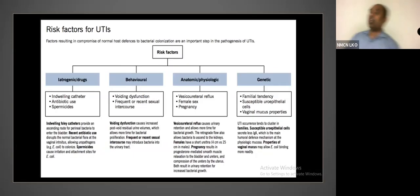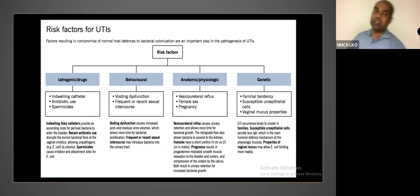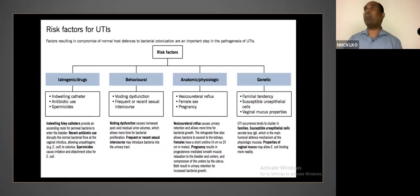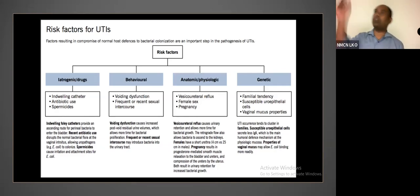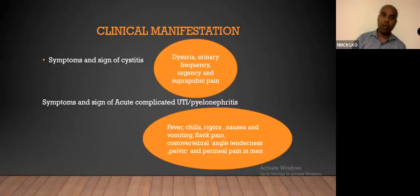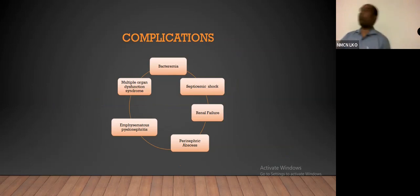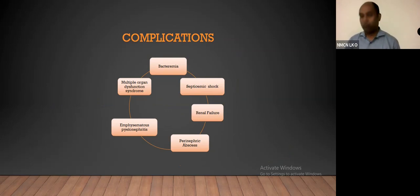The risk factors you should look for include indwelling catheters, prior antibiotic usage — which determines what type of treatment you will plan — and behavioral factors such as infrequent voiding or frequent recent intercourse that can lead to recurrent infections. Physiological changes like pregnancy, genetic susceptibilities, and anatomical changes like stones or strictures are also important. Complications can include bacteremia, septicemic shock, perinephric abscess, renal failure, and pyonephrosis.